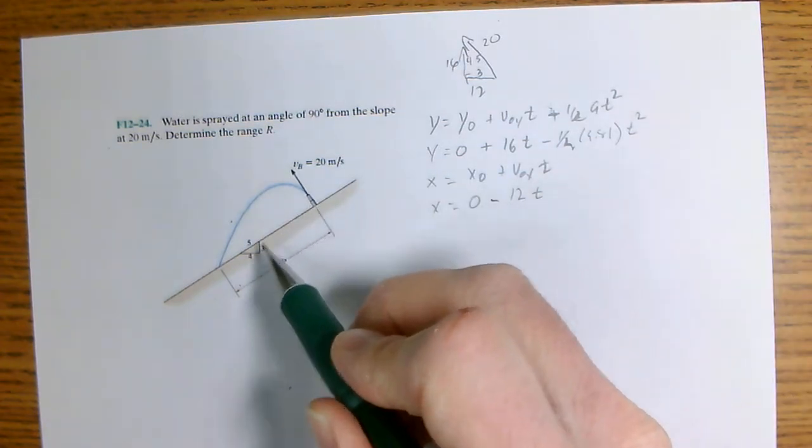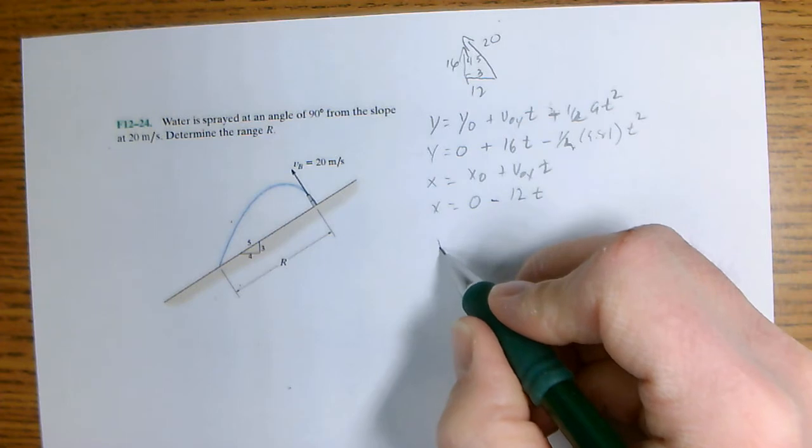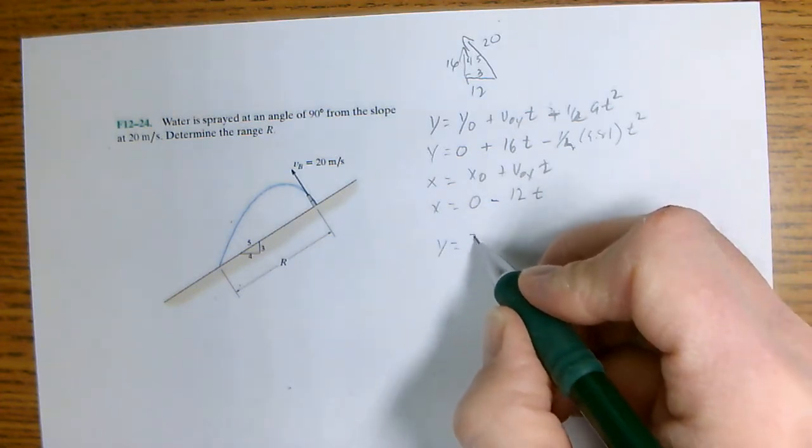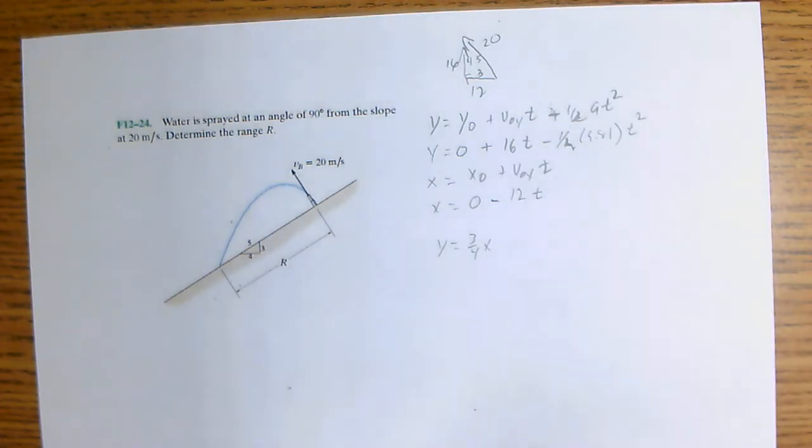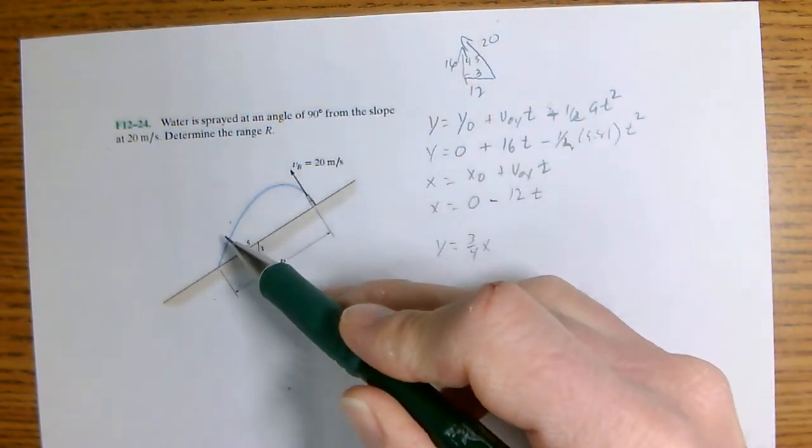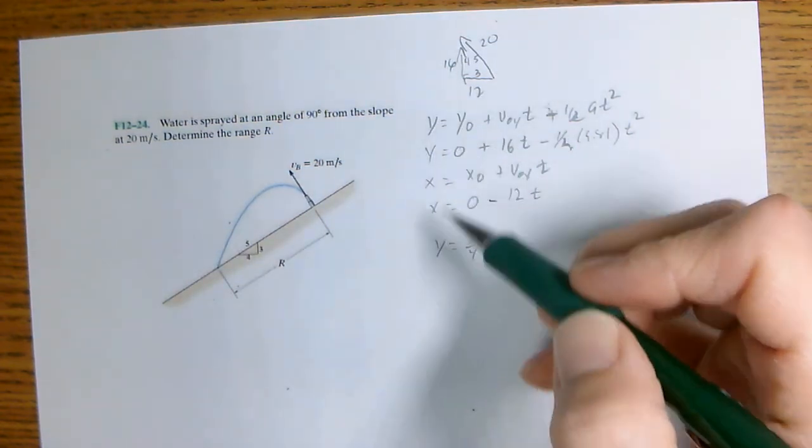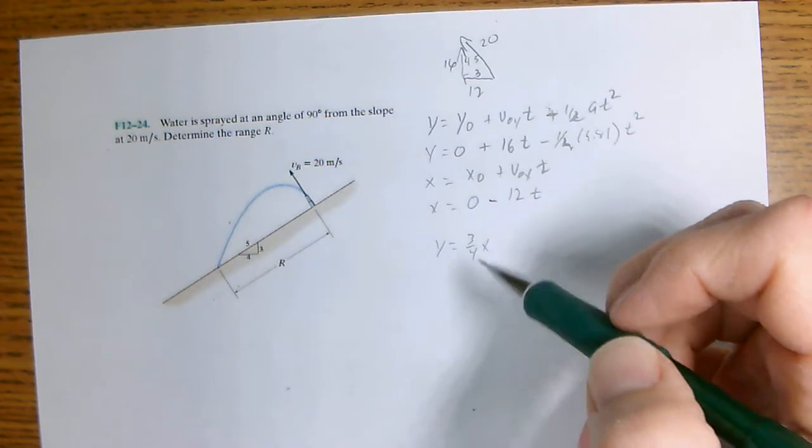Now if we look at the slope we can write the equation of that line Y equals three-fourths X. So we want to know when this jet will meet this line, when will the Y's be equal and when will the X's be equal.